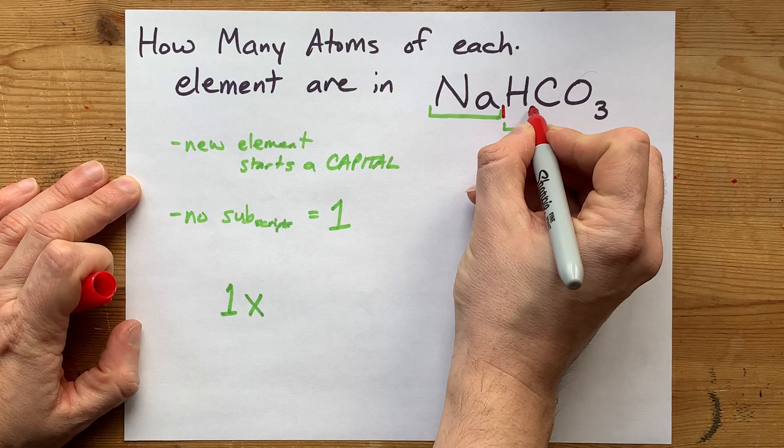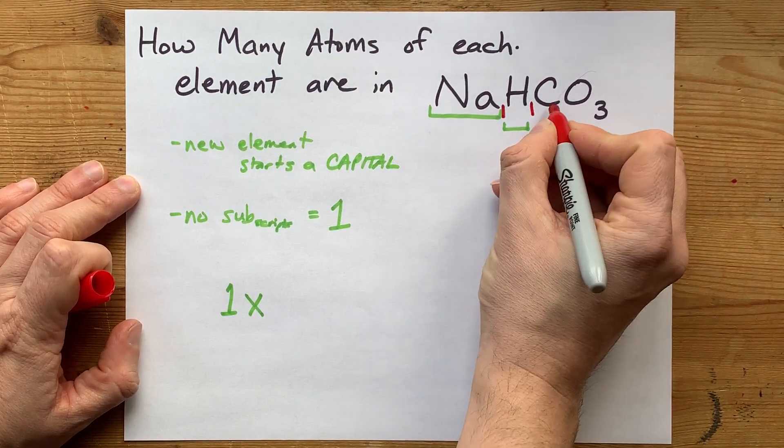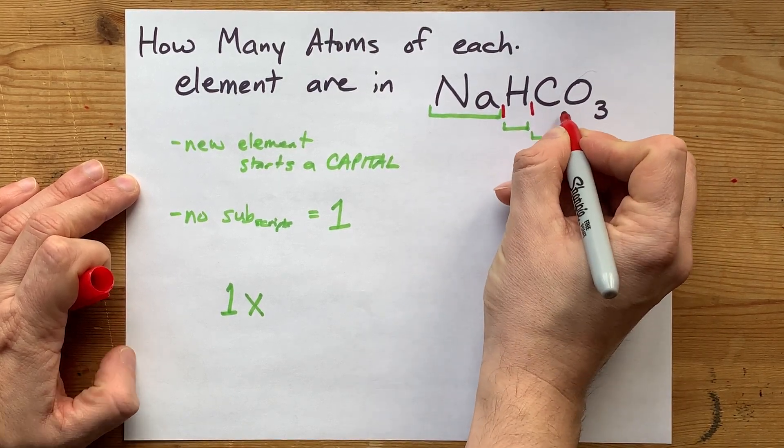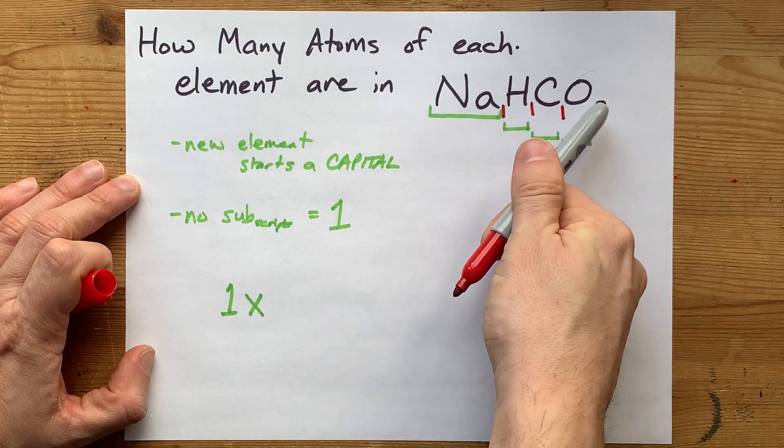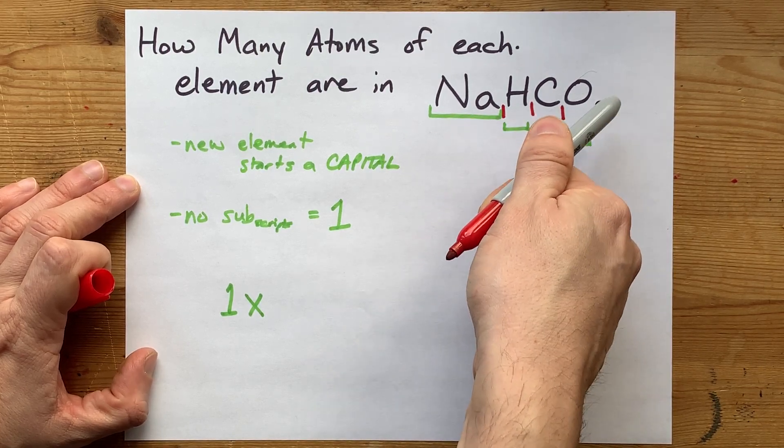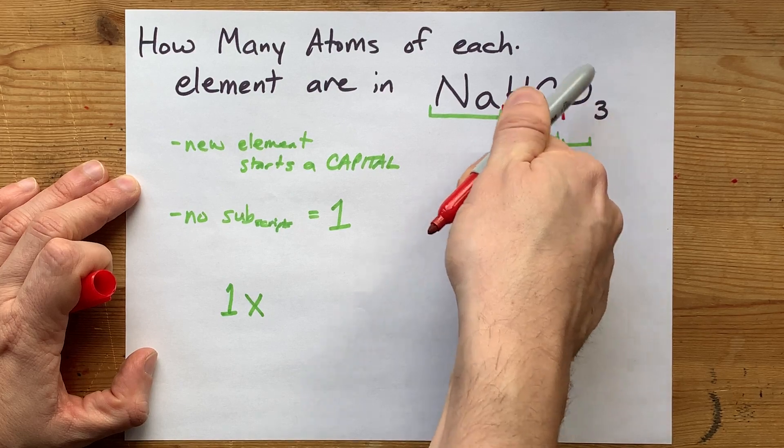How many Hs are there? Well, there's no subscript, so it's 1. How many Cs are there? Well, there's no subscript, so it's 1. How many Os are there? Well, there is a subscript there - it's 3, which tells us we have 3 Os.